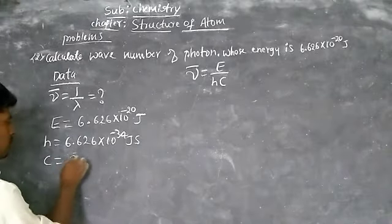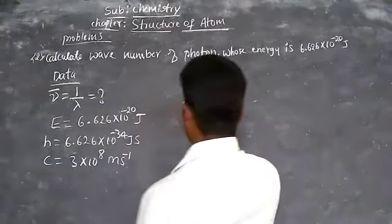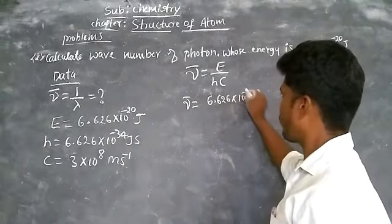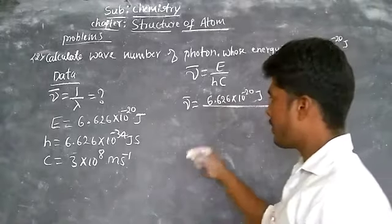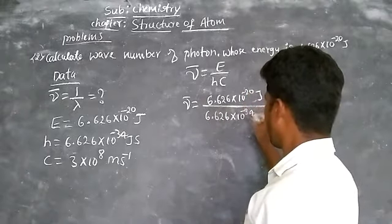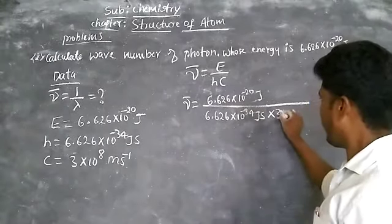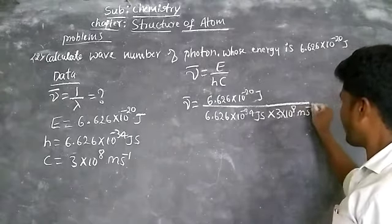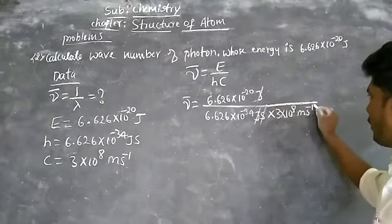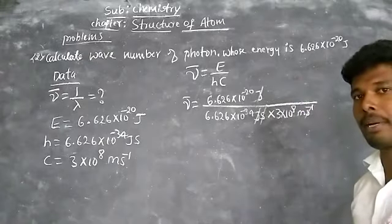C equals 3 × 10⁸ meters per second — that is the speed of light. Substituting: nu-bar equals 6.66 × 10⁻²⁰ joules divided by 6.626 × 10⁻³⁴ joule·second into 3 × 10⁸ meters per second. Joules cancel, seconds cancel, leaving only per meter.